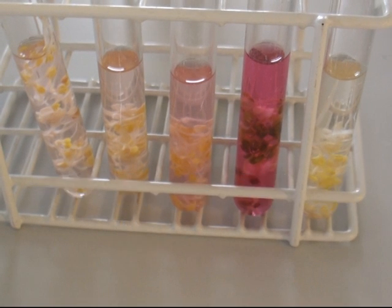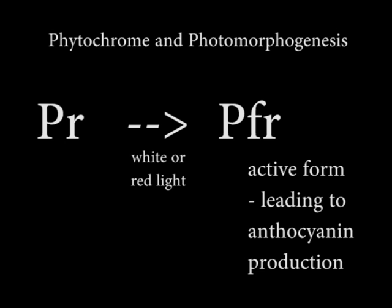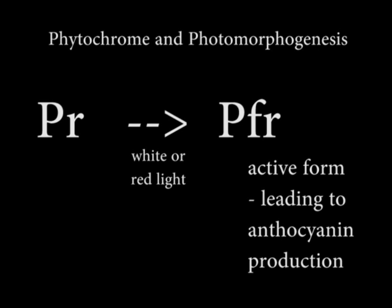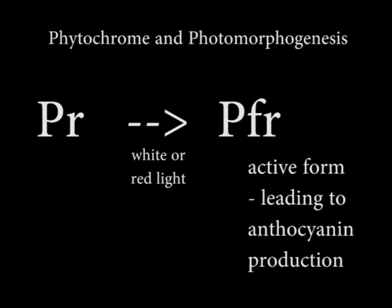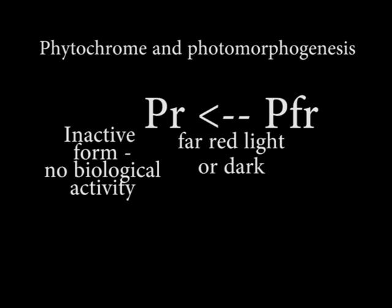So what's going on here then? Well, the fact that red and far red light have effects indicates that the important photoreceptor phytochrome is involved in this response. Under white light or red light treatment, the inactive phytochrome red form (Pr) becomes the active phytochrome far red form (Pfr) which leads to anthocyanin production when it's present after white or red light treatment.